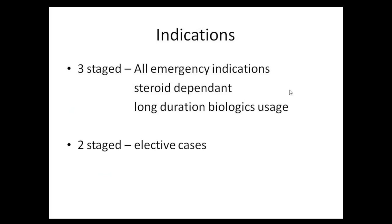In all emergency indications, a subtotal colectomy with end ileostomy is performed first. The patient is resuscitated and nutritionally optimized, made steroid-free, and then the pouch is constructed with a diversion ileostomy. In steroid-dependent patients, the entire colon is removed with a mucous fistula or Hartmann's procedure. The distal stump is managed with enemas or suppositories, and the patient is kept steroid-free for at least three to six months before IPAA with diversion ileostomy.